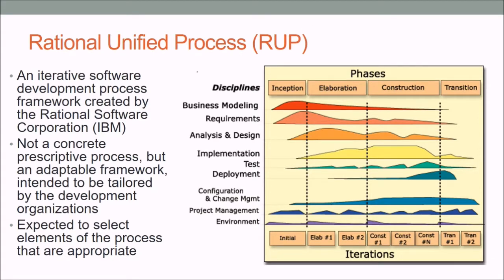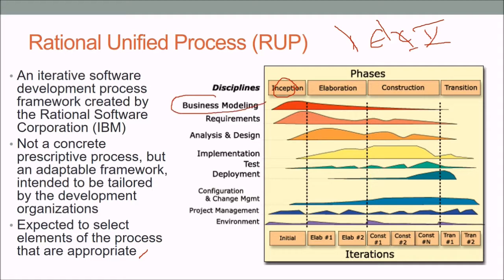RUP — Rational Unified Process — is an iterative software development process framework created by Rational Software Corporation (IBM). It is not a concrete prescriptive process but an adaptable framework tailored by the development organization. Its four phases are remembered as IECT: Inception, Elaboration, Construction, and Transition. Disciplines include business modeling, requirements, analysis and design, implementation, test, and deployment, with configuration and change management throughout.